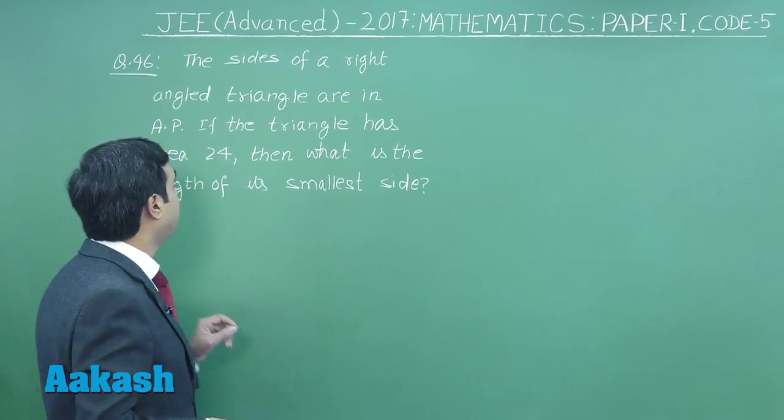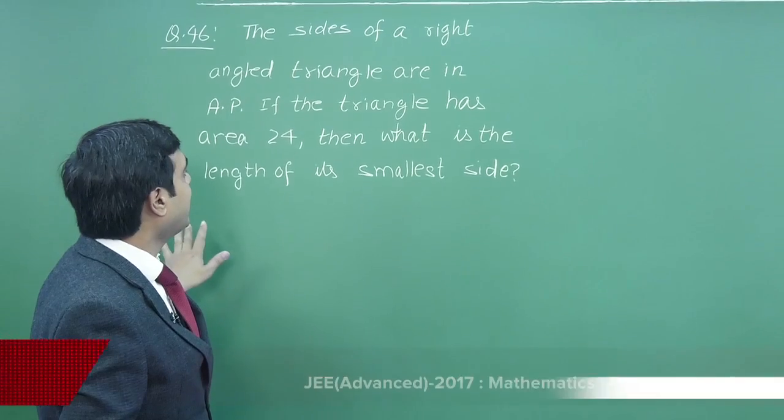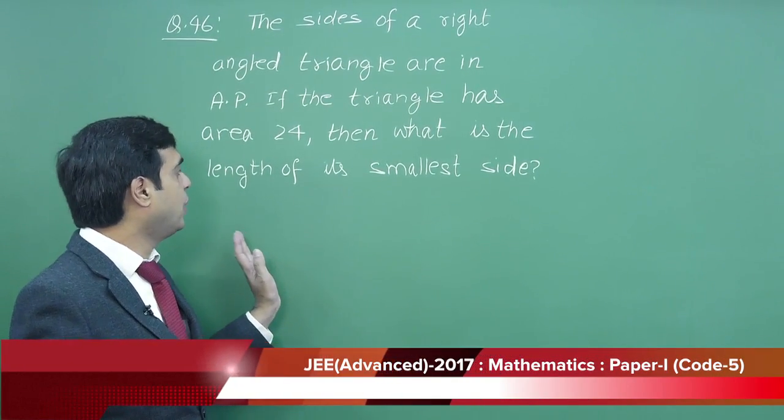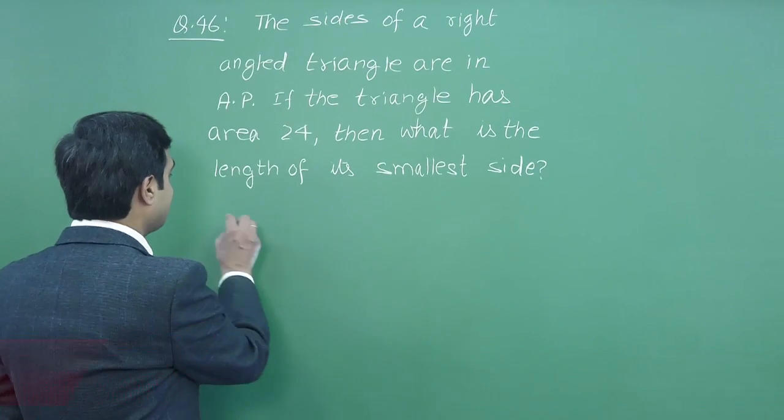Let us consider question number 46, integer type. The sides of a right-angled triangle are in AP. If the triangle has area 24, then what is the length of its smallest side? Let us start the question.